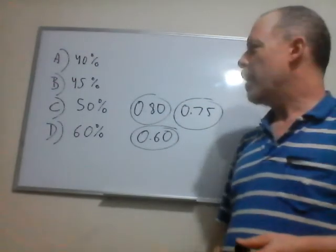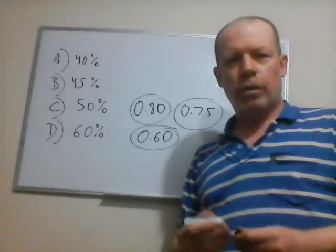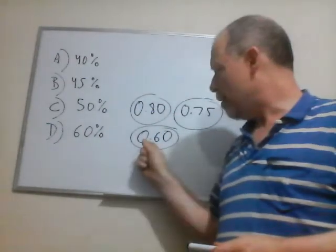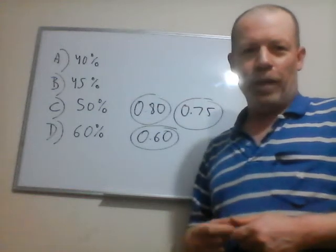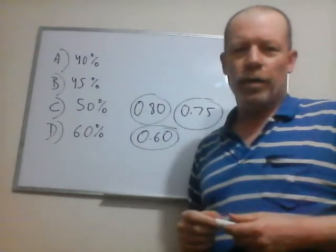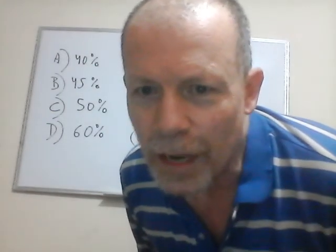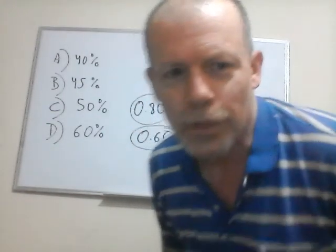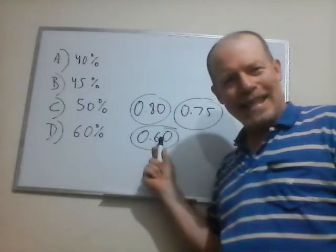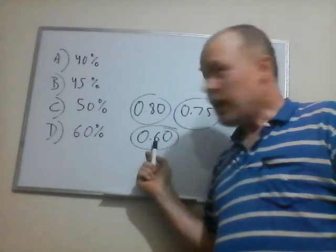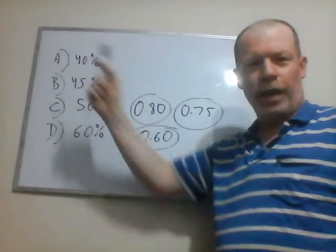Read the problem carefully. 0.6 is the discounted price compared to the original price of one. The question asks for the total discount employees receive off the original price — that is 1 minus 0.6, which gives you 0.4, or 40 percent. Wait — the total discount is 40 percent. That's the answer, not 0.6 itself.